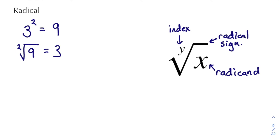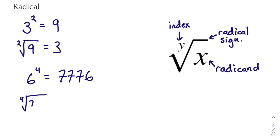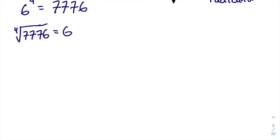For square roots we don't usually include an index number, so if you see a radical without an index number it means square root. This works for everything: six to the power of four equals a very big number — six times six is thirty-six, and thirty-six times thirty-six... I've got to pull up my calculator to do that quickly.